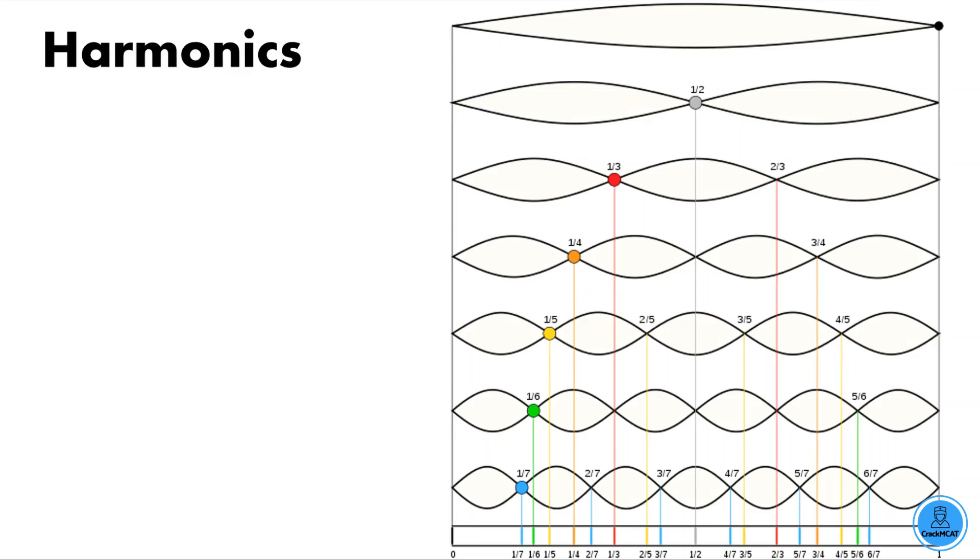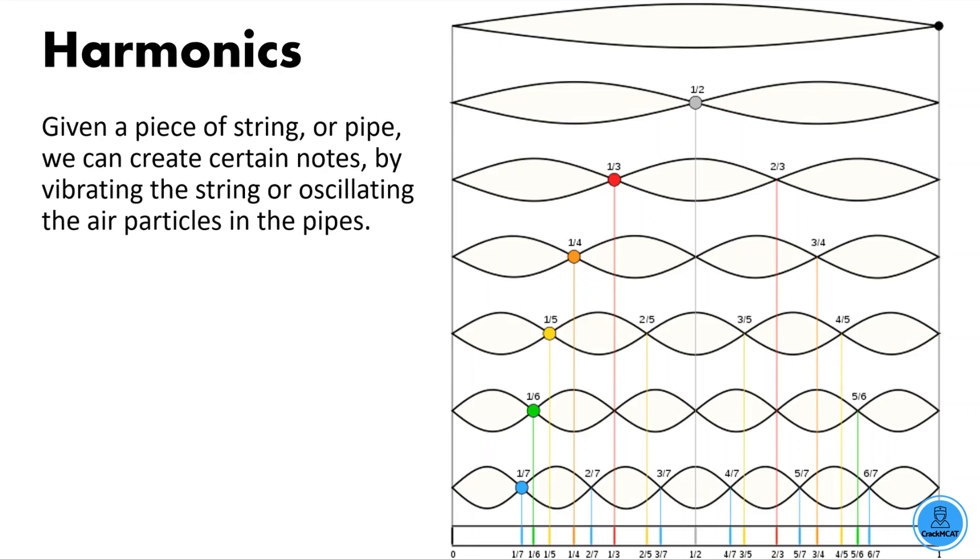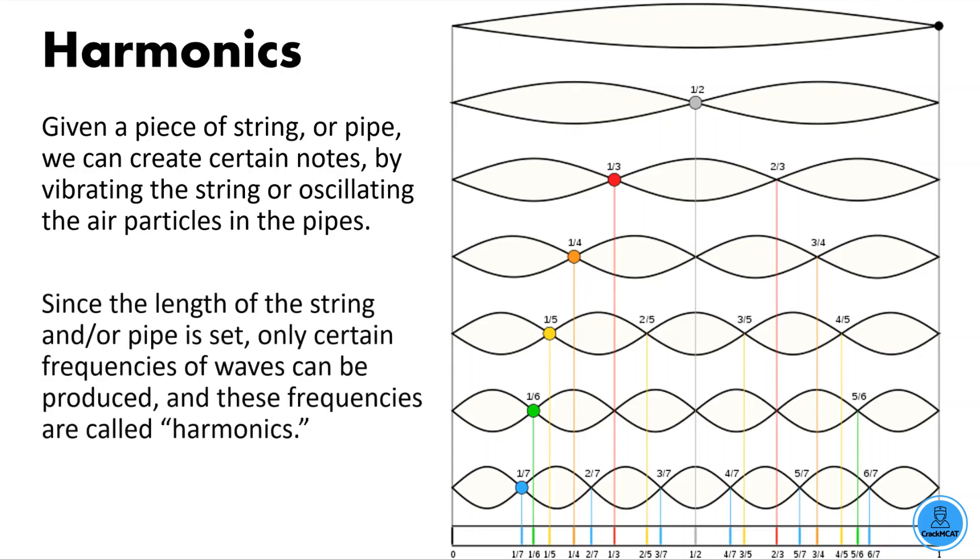So harmonics are basically an extension of resonant frequencies. They're basically like certain wavelengths or certain frequencies of sound that the instrument is meant to create. And these, like the set of...